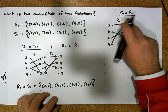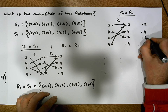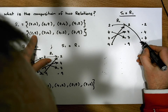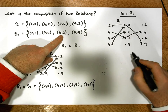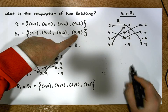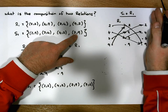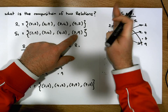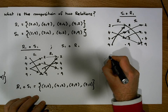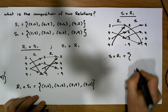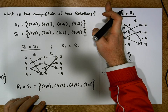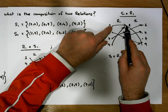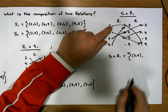Now we take these values as domain inputs and map them using S1 into range values 2, 4, 7, and 9. S1 tells us: 2 is taken to 9, 7 is taken to 4, 4 is taken to 2, and 7 is also taken to 9. This mapping across represents S1, so we've done R1 first and then S1 — that is, S1 after R1. We can go from 2 through to 9, giving us the pair (2, 9).